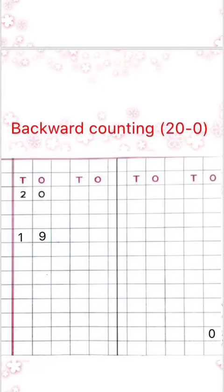20, 19, 18, 17, 16, 15, 14, 13, 12, 11, 10, 9, 8, 7, 6, 5, 4, 3, 2, 1, and lastly we have 0.